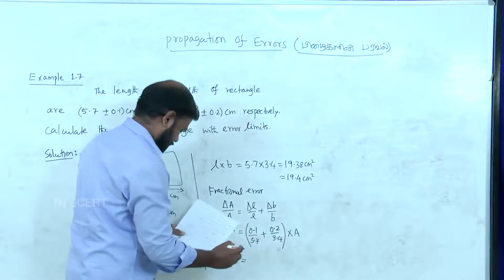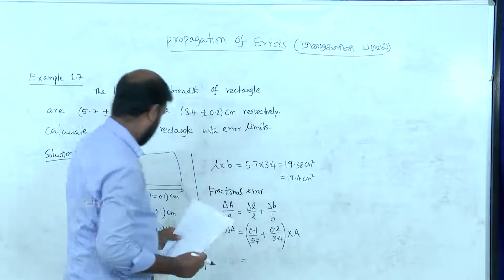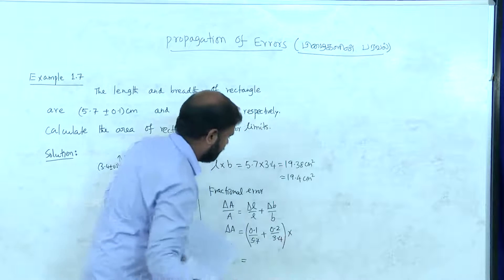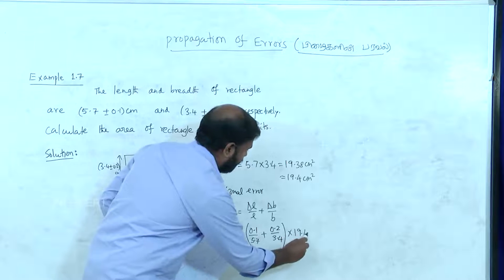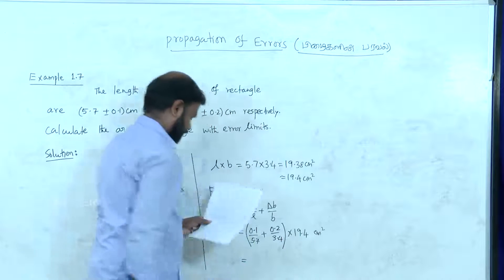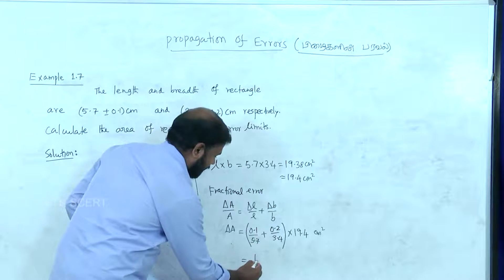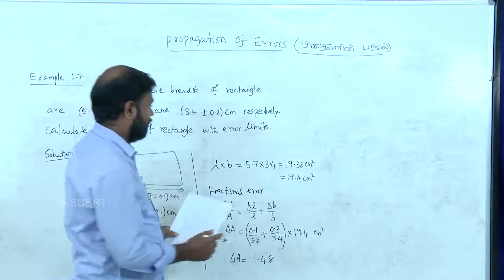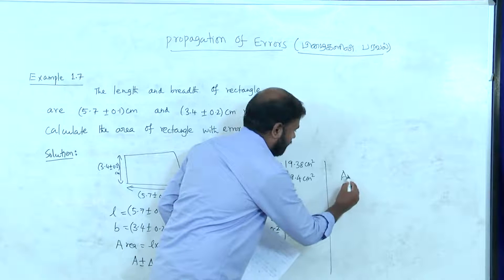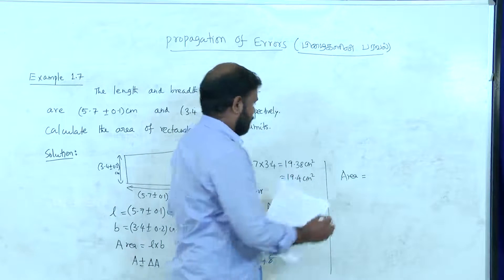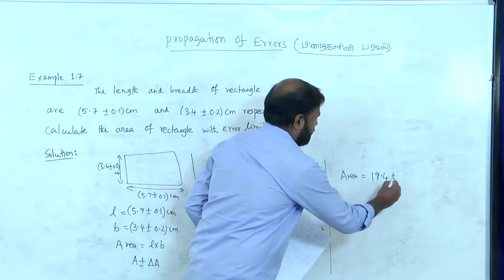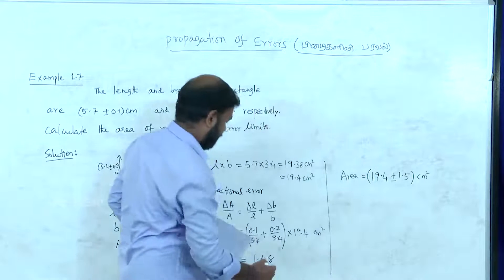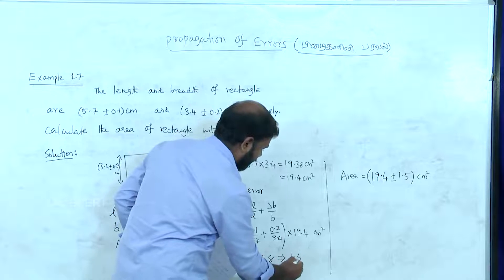A is nothing but 19.4 centimeter square. So finally we get 1.48. The area is equal to 19.4 plus or minus 1.5 centimeter square. This is equal to 1.5.